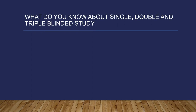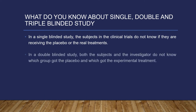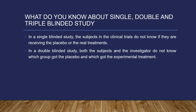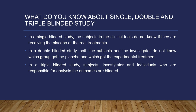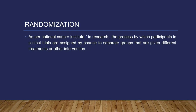What do you know about single, double, and triple blinded studies? In a single blinded study, the subjects in a clinical trial do not know if they are receiving the placebo or the real treatment. In a double blinded study, both the subject and the investigator do not know which group got the placebo and which got the experimental treatment. In a triple blinded study, subjects, investigator, and individuals who are responsible for analyzing the outcomes are all blinded.